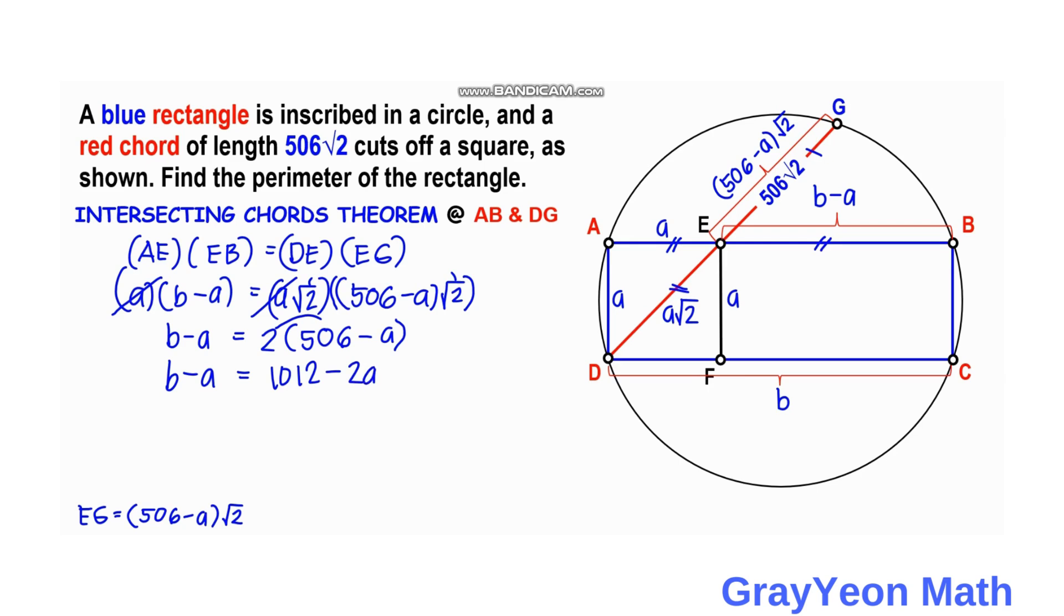Next we put this -2a to the left hand side. So -a plus 2a is equal to 1012. Simplifying this we have b plus a is equal to 1012.